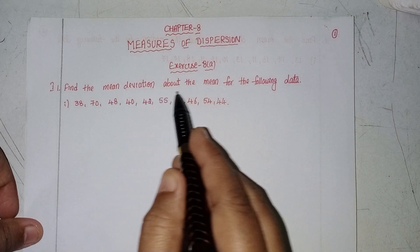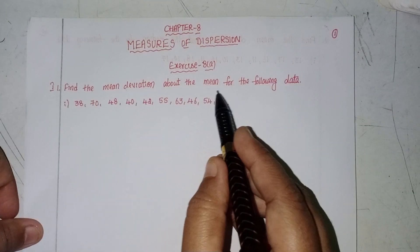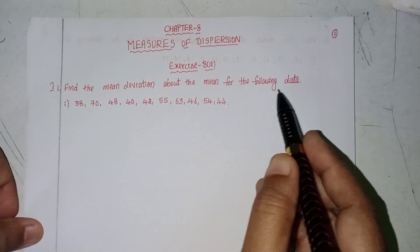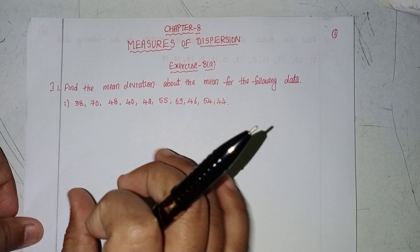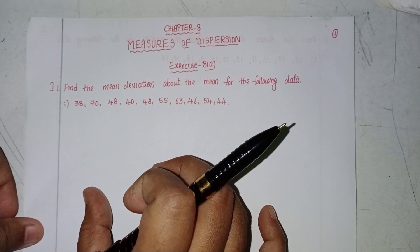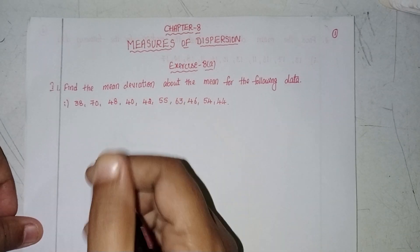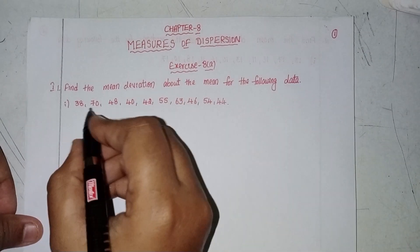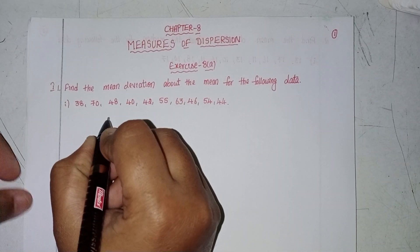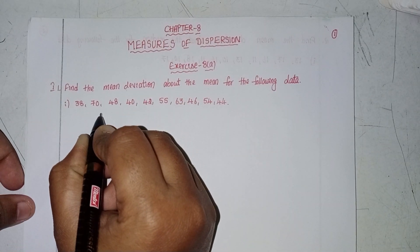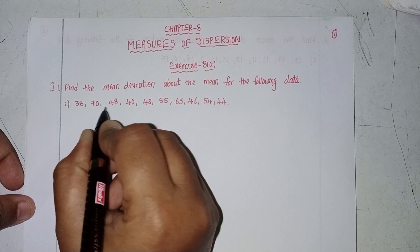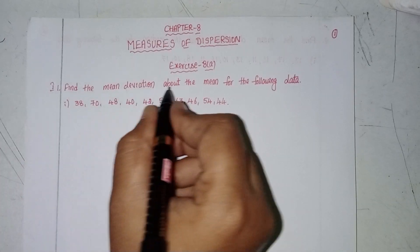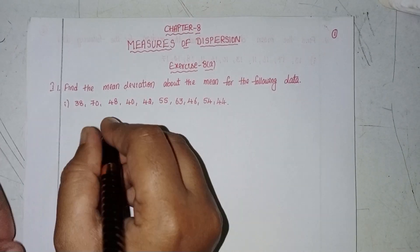Find the mean deviation about the mean for the following data. This is ungrouped data. So let's find the mean. Find out about the mean — mean deviation.